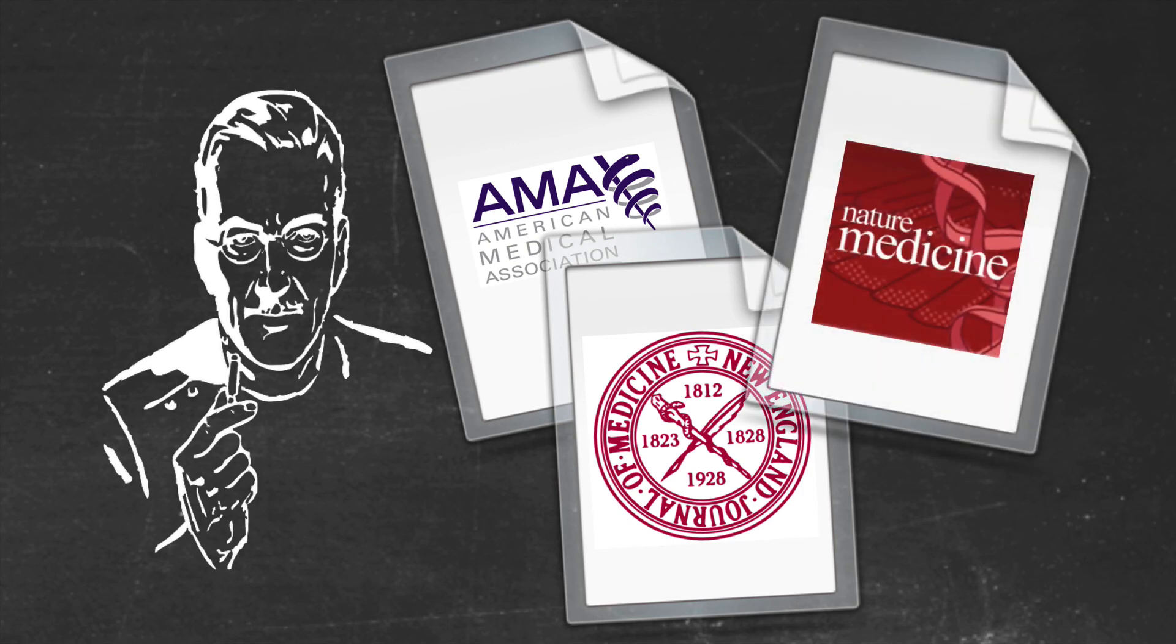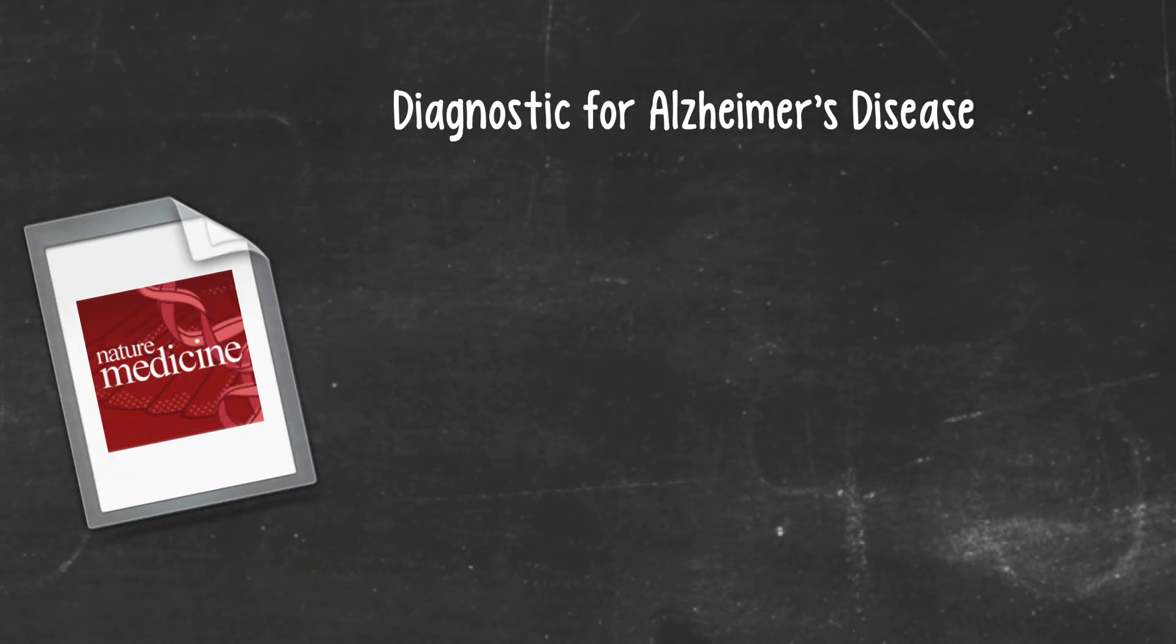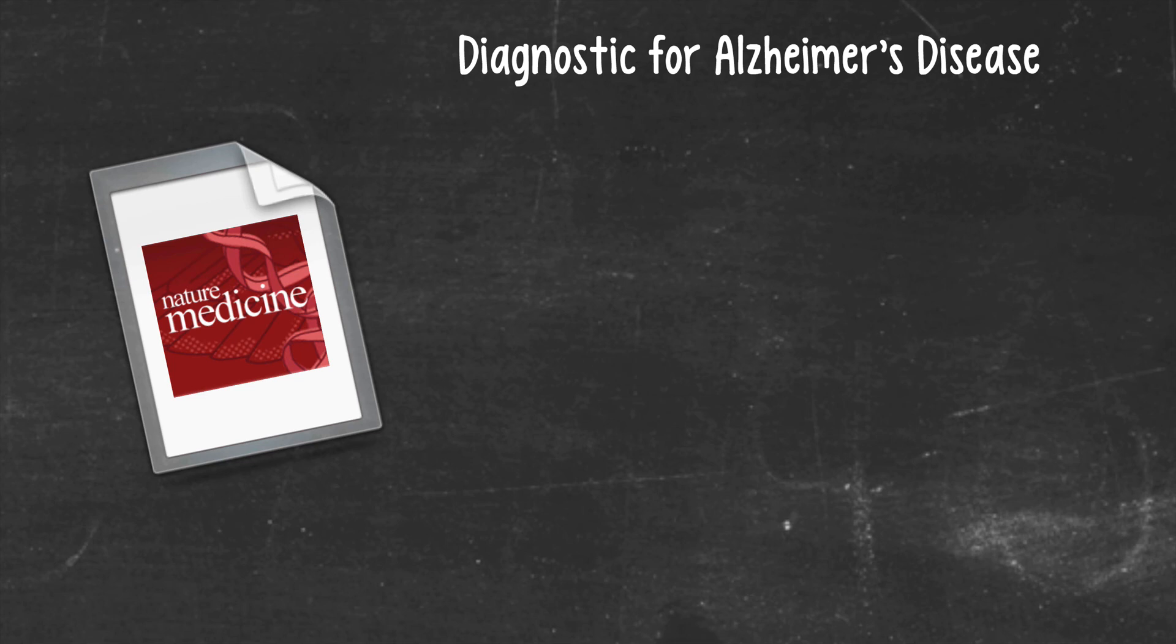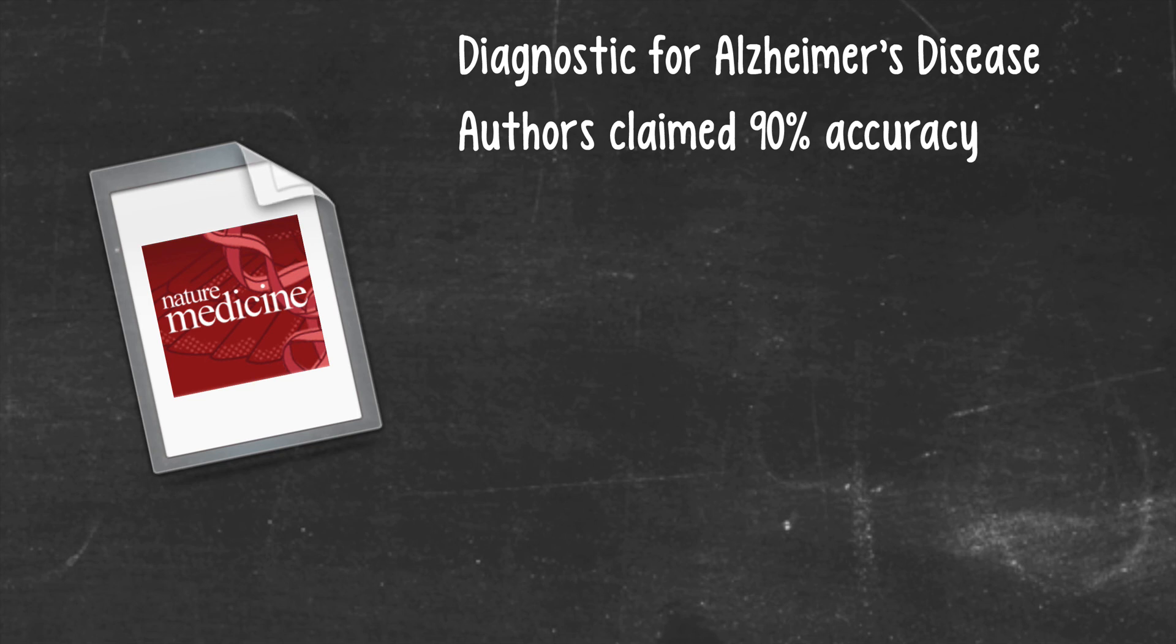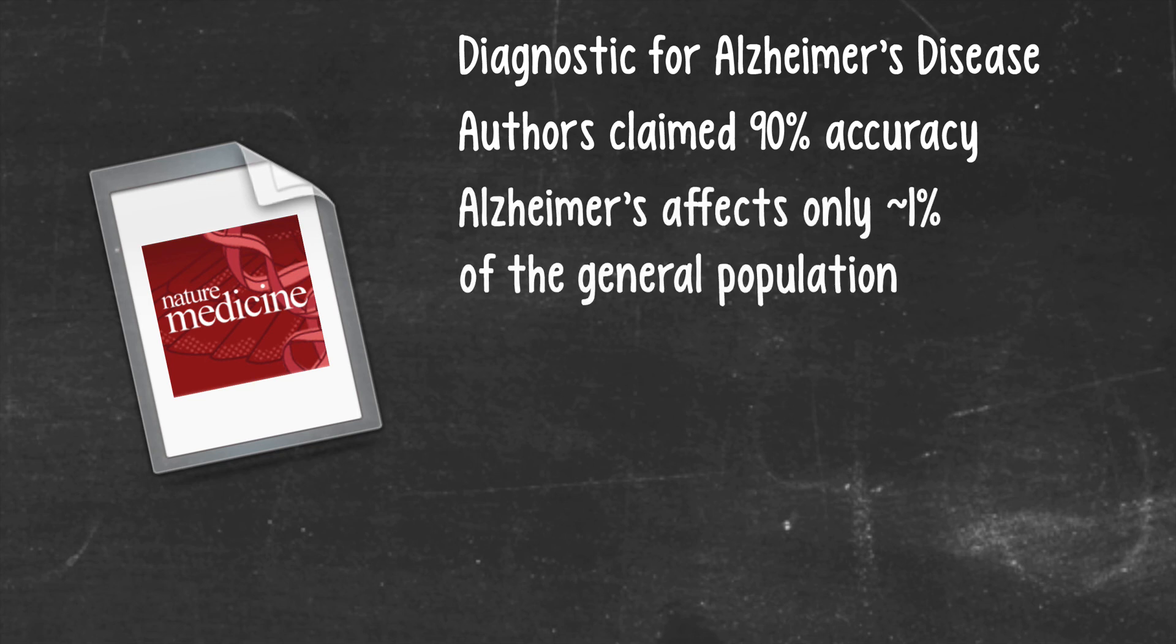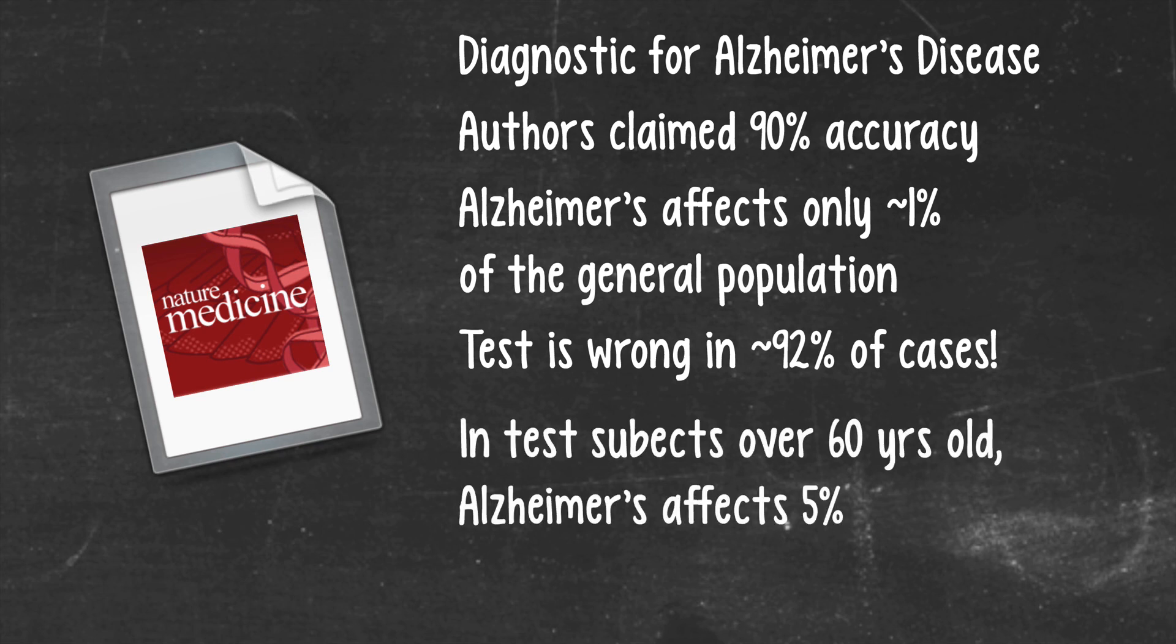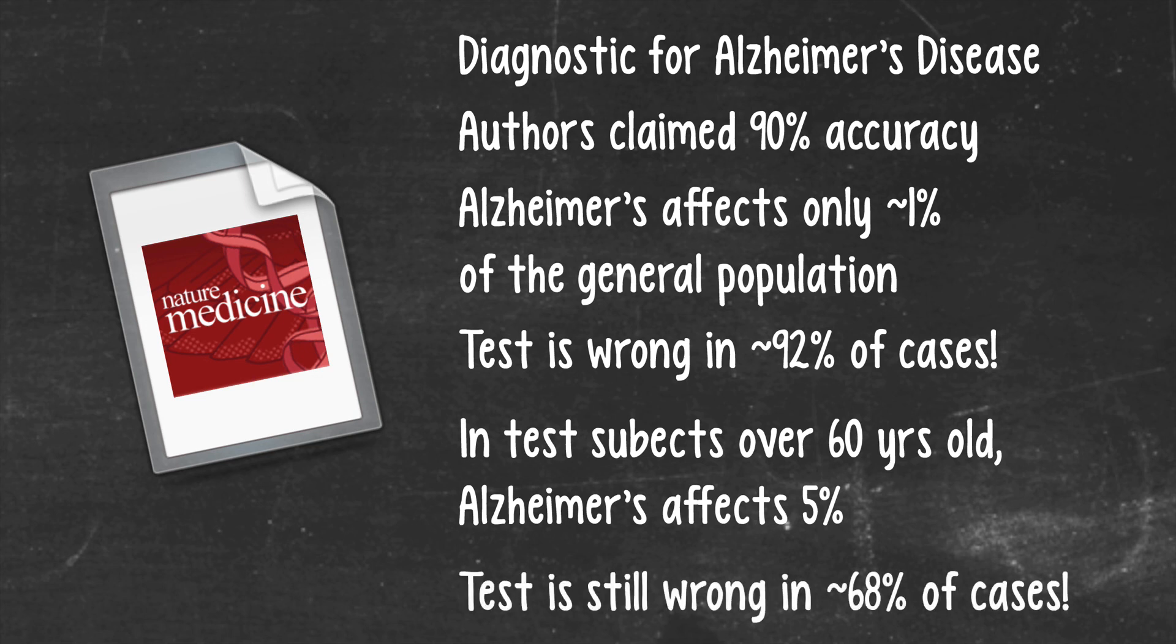There was a case of this quite recently in the journal Nature Medicine. A research group had developed a new diagnostic for Alzheimer's disease. The authors claimed 90% accuracy. And it turns out that Alzheimer's only affects about 1% of the population. So when you look carefully at the numbers, it turned out that the test was actually wrong in about 92% of cases. The test did perform marginally better in a more elderly population of patients. Because in test subjects over 60 years old, Alzheimer's disease actually affects about 5% of the population. But even in this better case, the test was still wrong in about 68% of cases.